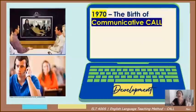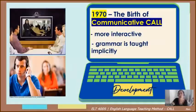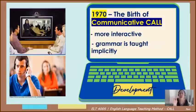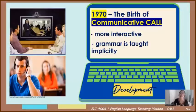Now let's move to the second phase: Communicative CALL. It is more interactive compared to Behaviorist CALL. During the behaviorist phase, learners could learn grammar explicitly — directly instructed. Whereas in this phase, the Communicative CALL of the 1970s, grammar was taught implicitly — not directly, but integrated through activities. As you can see in the picture, there was video conferencing and the use of earphones.